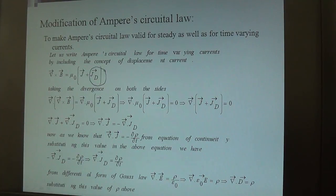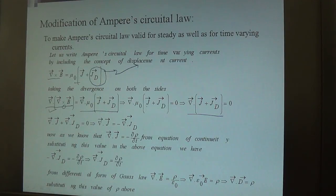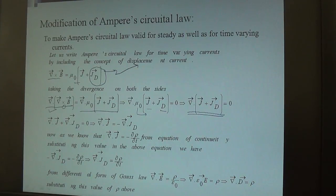Taking the divergence of both sides of the modified equation: divergence of the curl equals zero, so divergence of the right-hand side must also be zero. This gives us divergence of μ₀(J + J_D) = 0. Since μ₀ cannot be zero, divergence of J + J_D = 0, which simplifies to ∇·J + ∇·J_D = 0, meaning ∇·J = −∇·J_D.